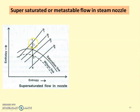As expansion proceeds, the pressure decreases, the quality of the steam decreases, and the temperature is also decreasing. The superheated steam temperature keeps on decreasing. At this point, it is the saturation temperature — the temperature at the saturation line. Below the saturation line, the steam is expected to become wet steam.